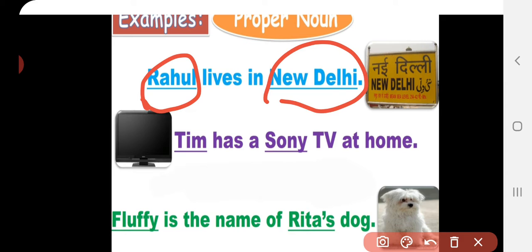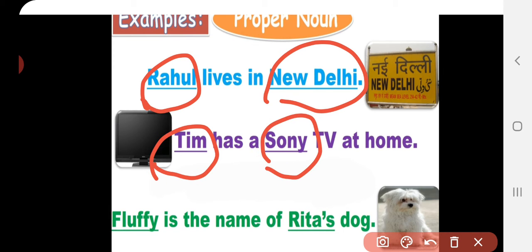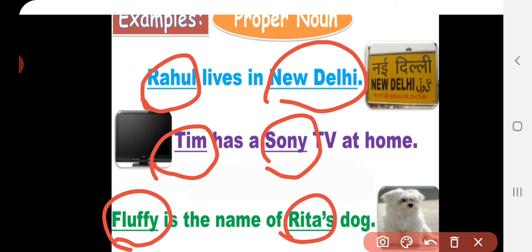In the second example: Tim has a Sony TV at home. What are the proper nouns here? Tim is a proper noun and Sony TV is a proper noun. In the third example: Fluffy is a name of Rita's dog. What are the proper nouns here? Fluffy and Rita — both are proper nouns.